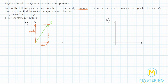For part B, we go 20 meters per second squared in the positive x direction, and positive 10 meters per second squared in the y direction. Doing the same thing will give us the resultant vector right like that, and that is vector a.